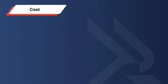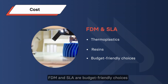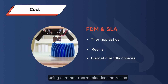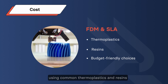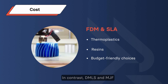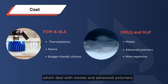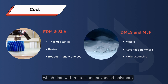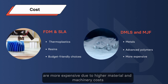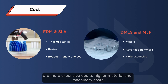Consideration 1: Cost. FDM and SLA are budget-friendly choices, using common thermoplastics and resins. In contrast, DMLS and MJF, which deal with metals and advanced polymers, are more expensive due to higher material and machinery costs.